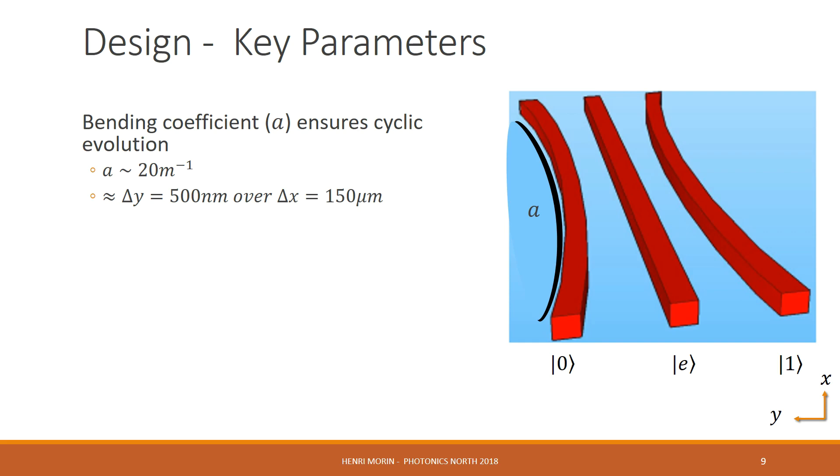The next key parameter is the length of the device. This is set when the tunneling is insignificant, which means that the device is long enough so that the tunneling between the waveguides is significant and any longer there is no tunneling. This value is about 300 microns.